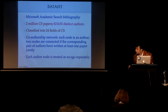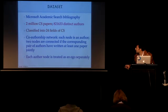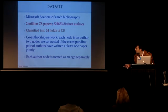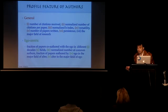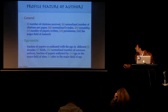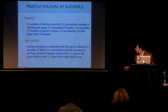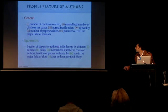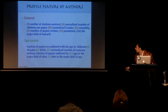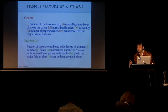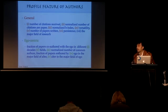For experiments, we collected data from Microsoft Academic Search comprising about 2 million computer science papers with around 82,000 authors, forming a co-authorship network where each author is a node. For profile similarity we use features including normalized number of citations, normalized h-index, certain egocentric properties like fraction of papers co-authored with the ego in different decades and fields, normalized. We also had field information — which primary area a paper belongs to, such as natural language processing, data science, and so on.